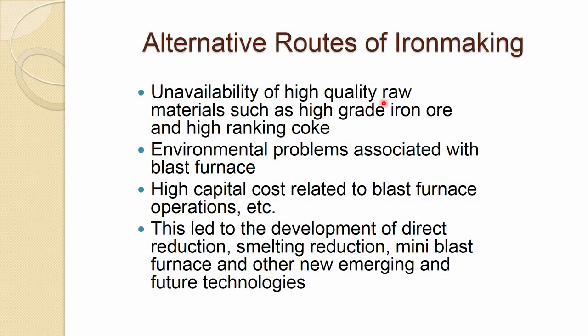We will talk about the alternative route of iron making. In this lecture, I would be talking about some of the processes by which we make iron either in solid form or in liquid form. These alternate routes of iron making came into existence mostly because of the unavailability of high quality raw materials such as high grade iron ore and high ranking coke.